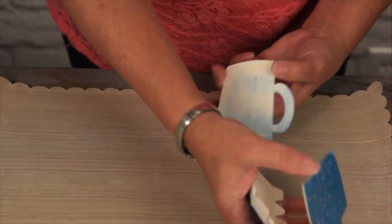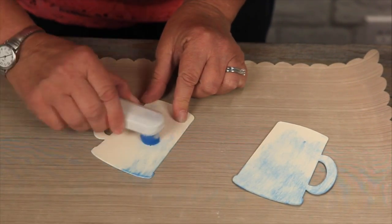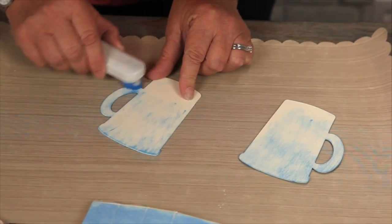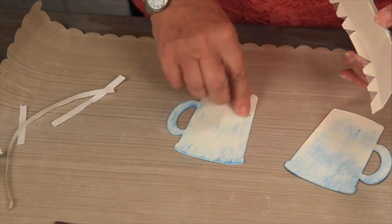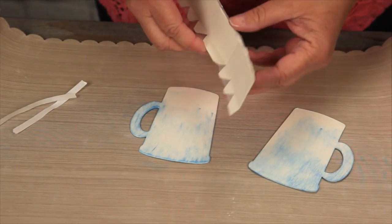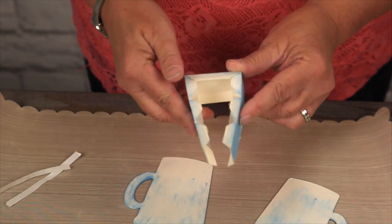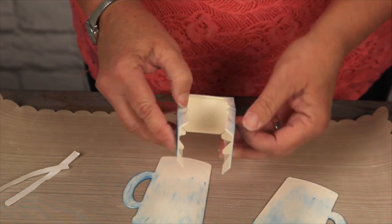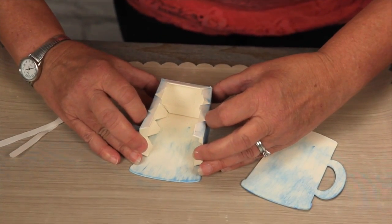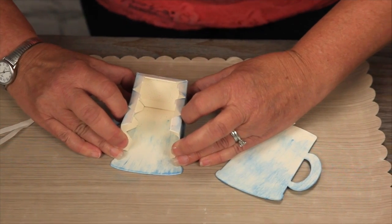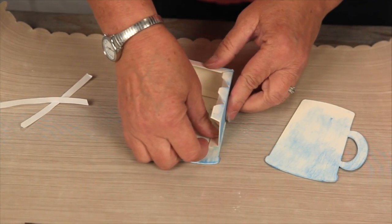So now we're going to make it 3D. On this one, I inked the back, so let's do that to make it match. I'm just going to do it real quick, just to give it a little color inside. Sometimes you can see the top part, and also the handles. I don't want to ink the inside too much because sometimes if you have a lot of ink here, it's wet and the tape will not stick to it. So now I'm going to fold it up into the shape.